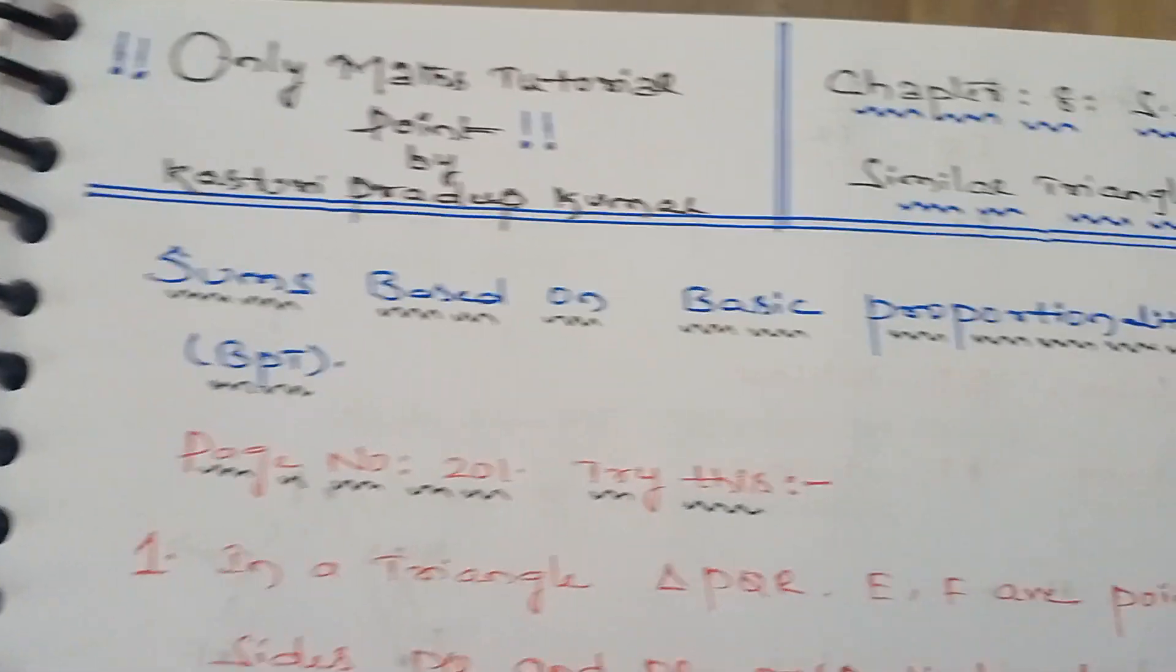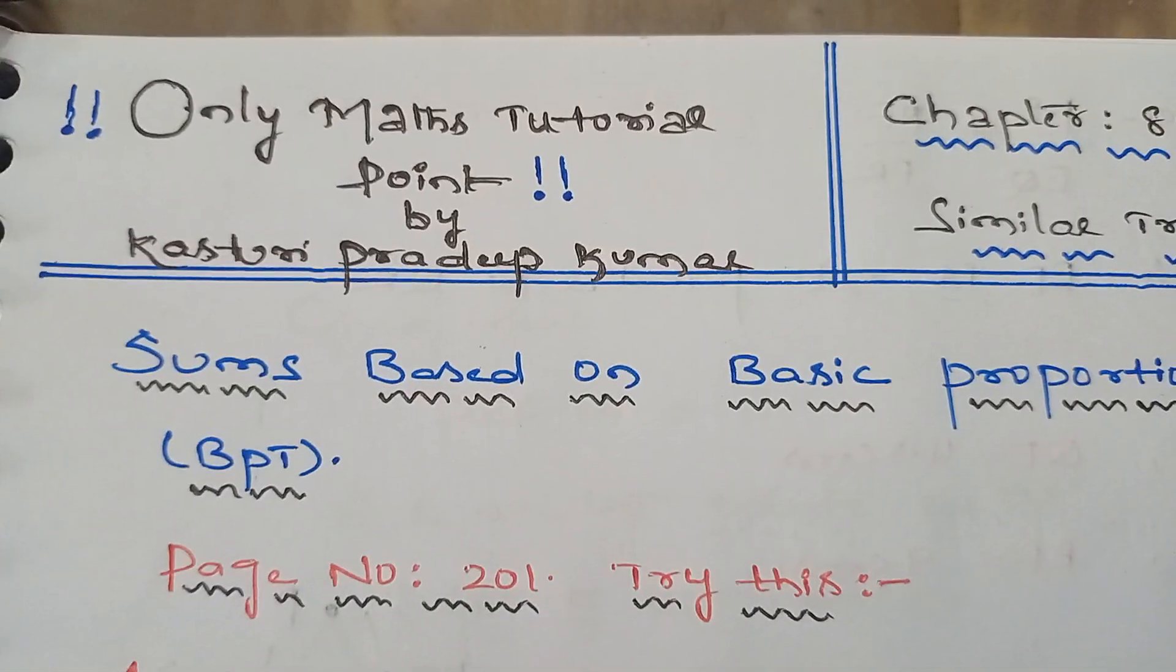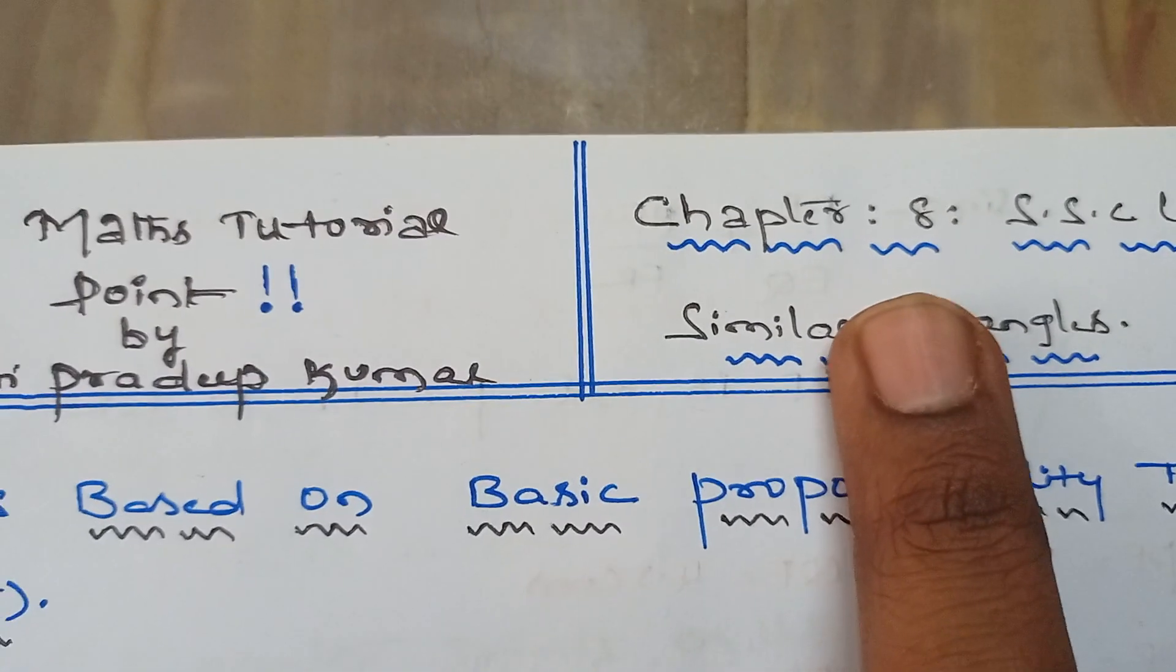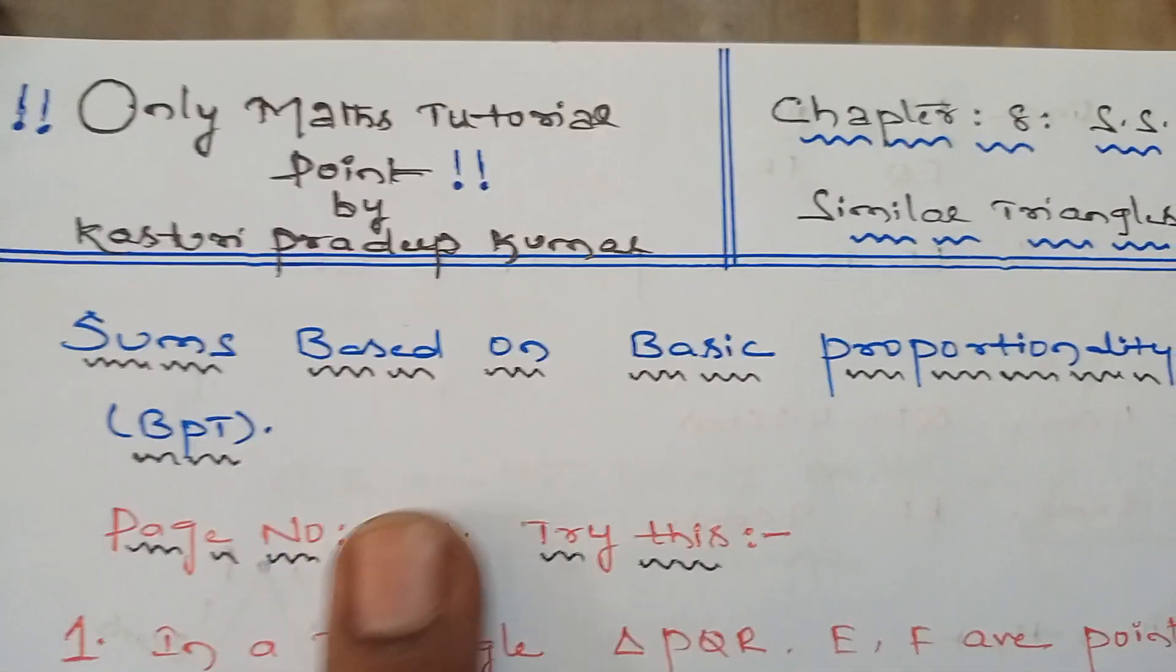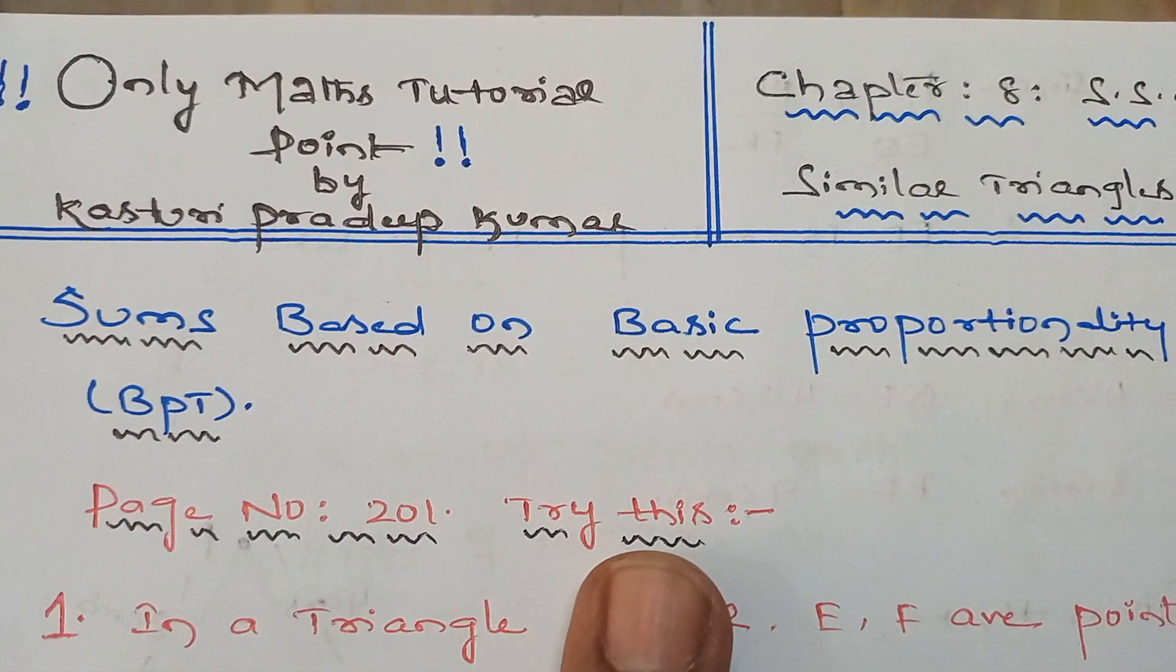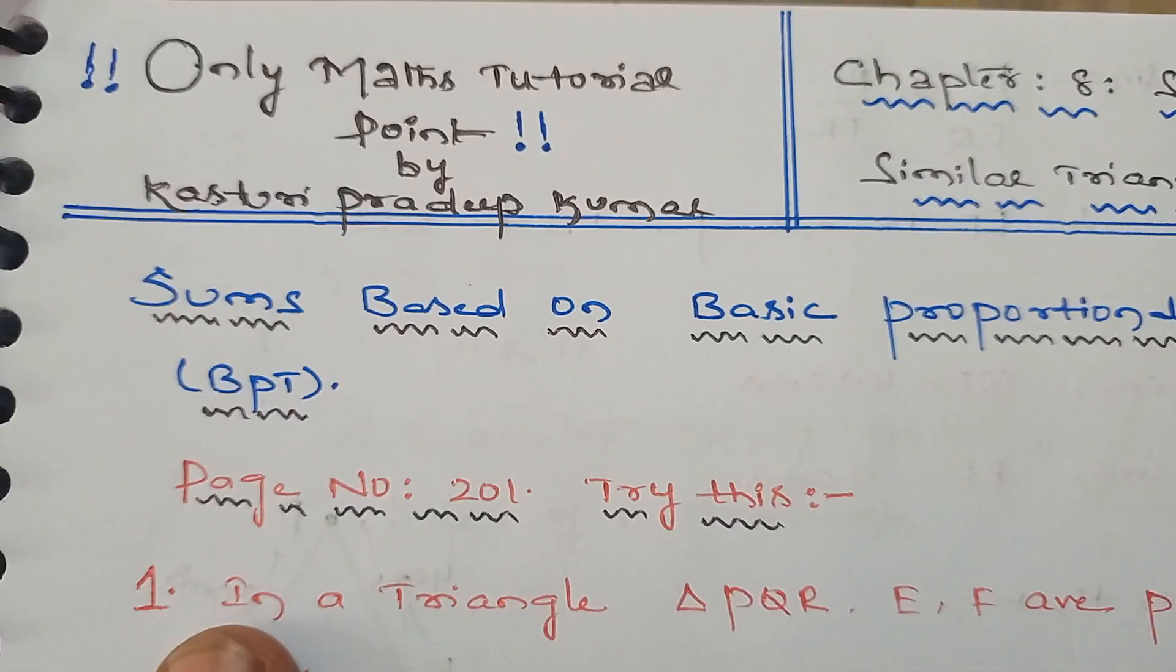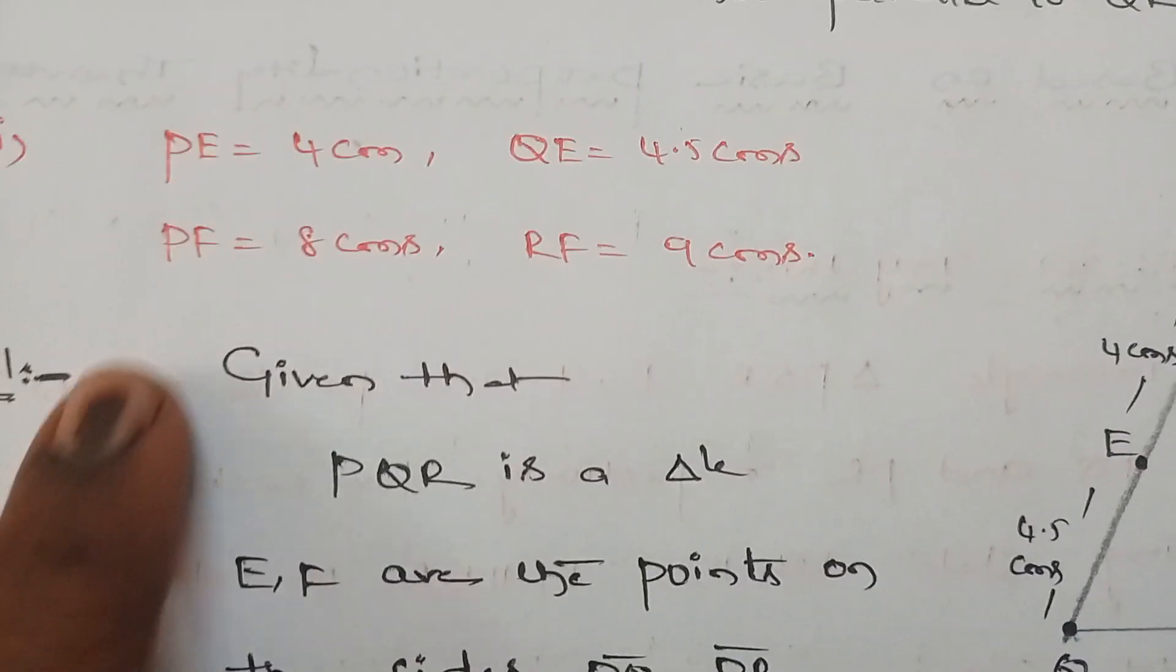Hi guys, welcome to Only Master 12 Point. Today we are going to discuss Chapter 8, Class 10, Similar Triangles, sums based on Basic Proportionality Theorem. That is page number 201, Try This, first question, second bit. Given that...